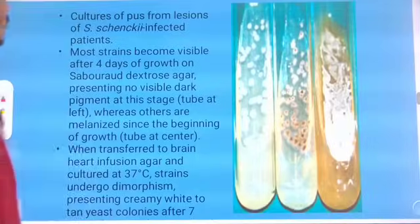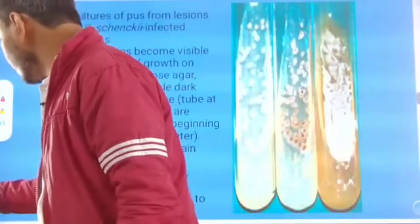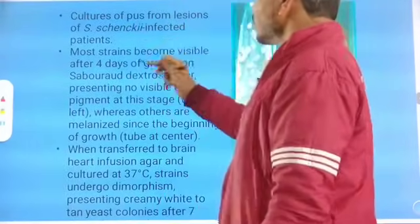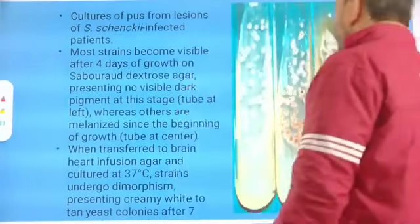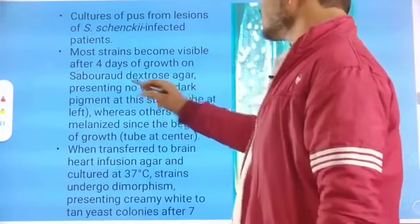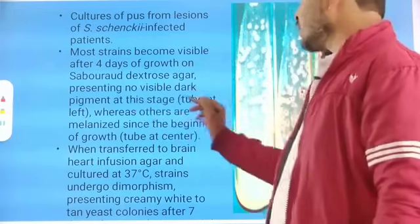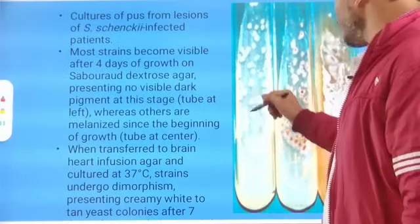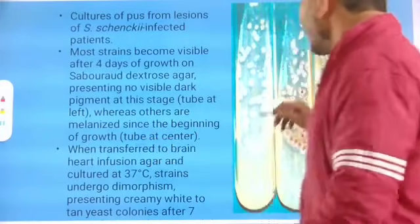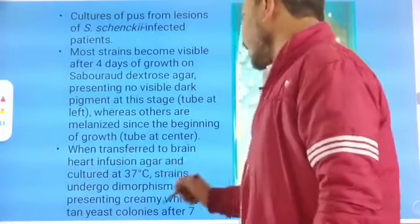Cultures of pus from lesions of infected patients show that most strains become visible after four days of growth on Sabouraud dextrose agar (SDA), presenting no visible dark pigmentation at this stage. When transferred to brain heart infusion agar and cultured at 37°C, the characteristic yeast form colonies then appear.